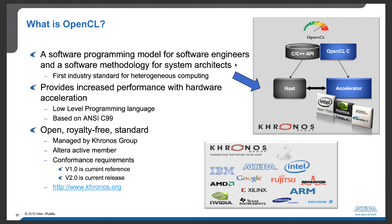So what is OpenCL? OpenCL is a software programming model for software engineers and a software methodology for system architects. It is an industry standard for heterogeneous computing. Within OpenCL, programmers can use familiar C or C++ APIs to write programs for the host side, and also use OpenCL to write programs for executing complex workloads on hardware accelerators such as multi-core processors, GPUs, and FPGAs.